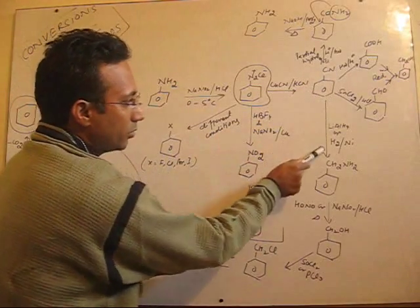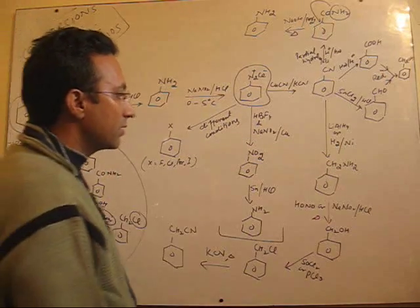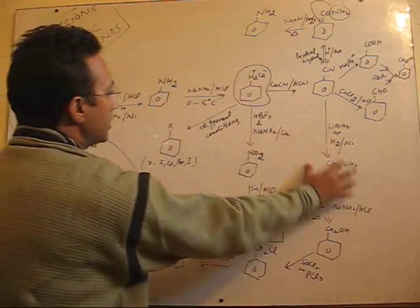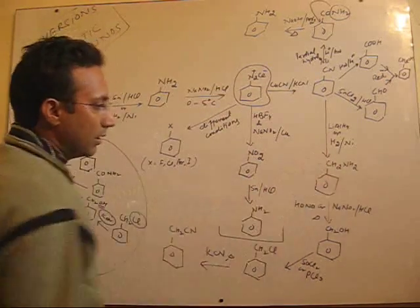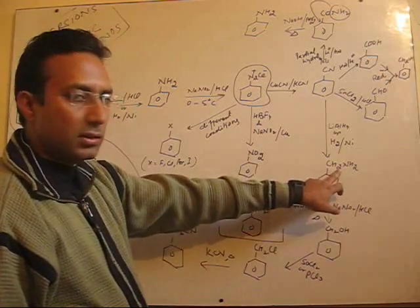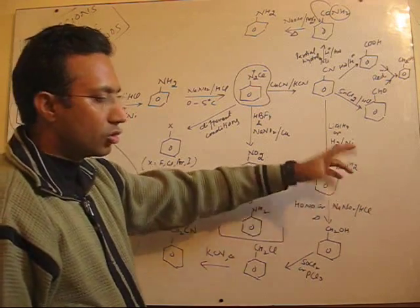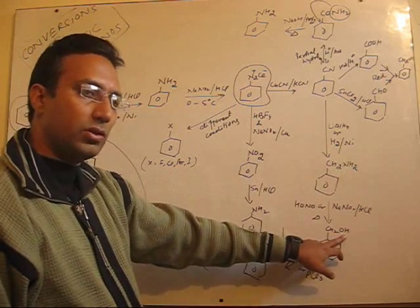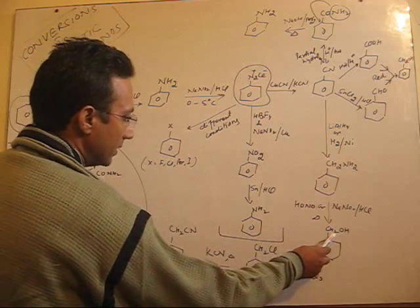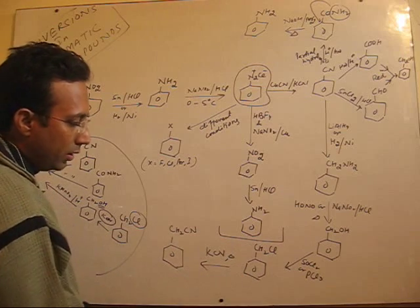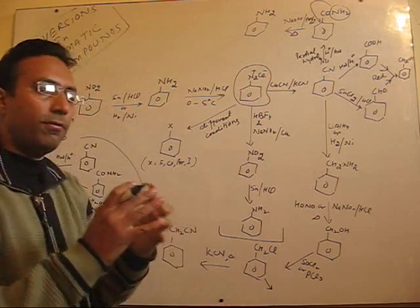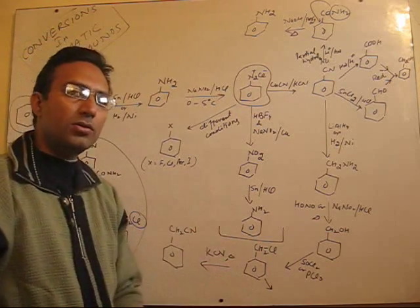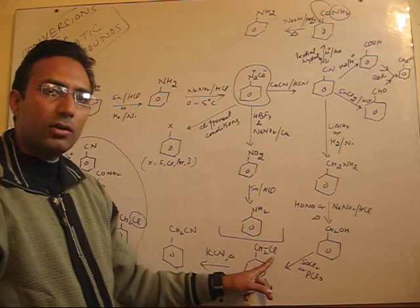If cyanides are reduced, they will give primary amines — this is benzylamine. Once you get benzylamine, being an aliphatic primary amine, when made to undergo reaction with nitrous acid, the NH2 group gets converted into OH, allowing you to enter into alcohols. Once you get benzyl alcohol, you can get benzyl chloride, and alkyl halides are also the heart of so many conversions through nucleophilic substitution reactions.